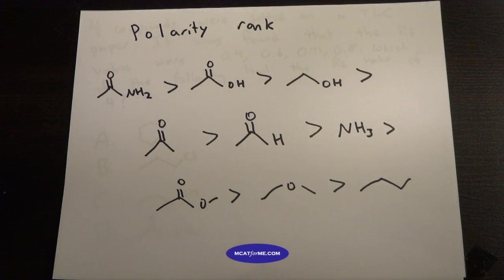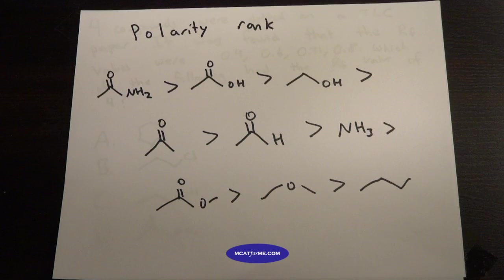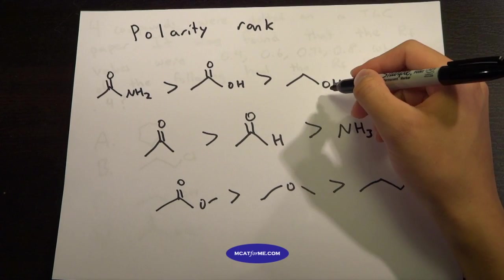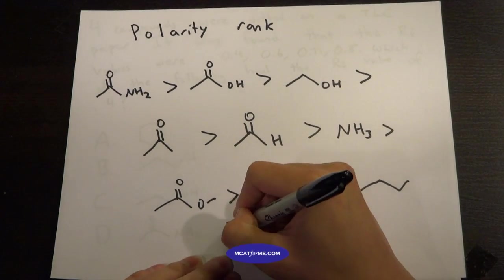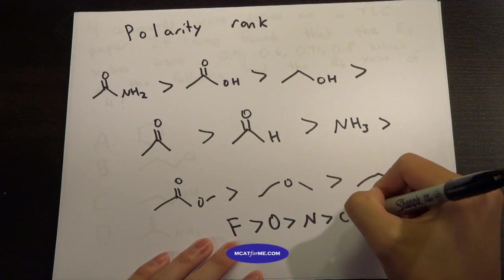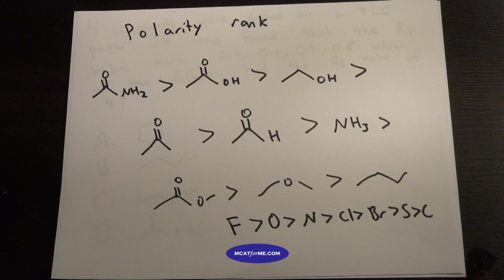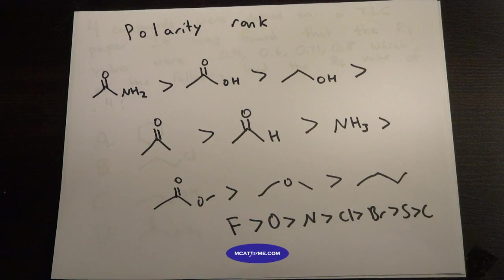So we can talk about some of these. So for example, alcohol, why would that be? Well, the reason it should be fairly obvious is that an alcohol has an O in it, a very electronegative atom, and remember our FONCLBRISCH. Okay, so FONCLBRISCH, this would be the most electronegative, and the H would be the least electronegative, but those are all very electronegative to begin with.